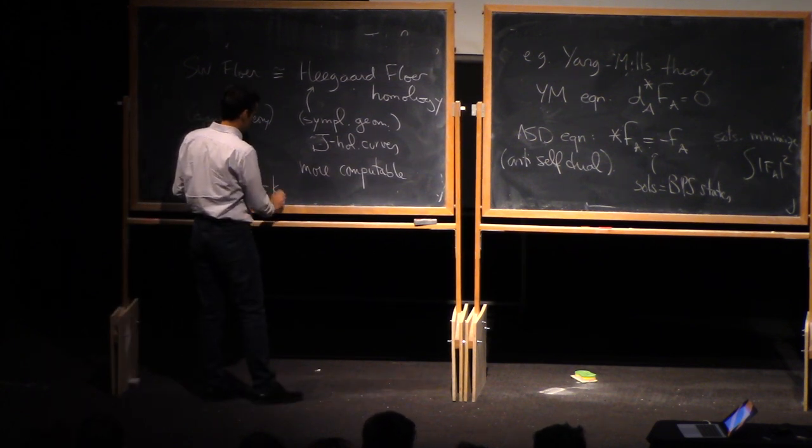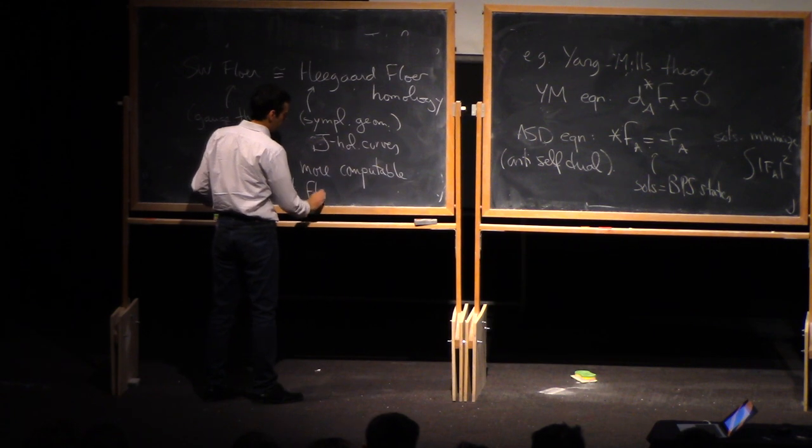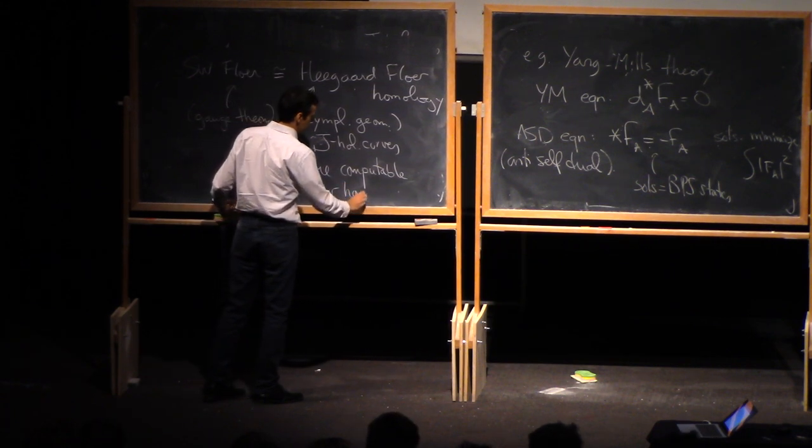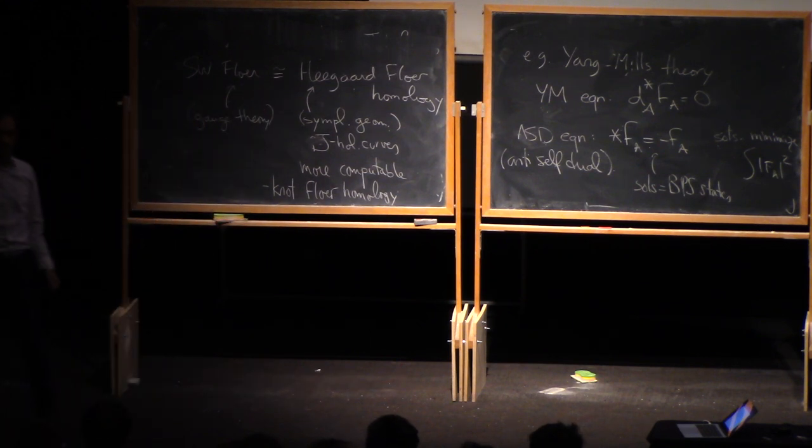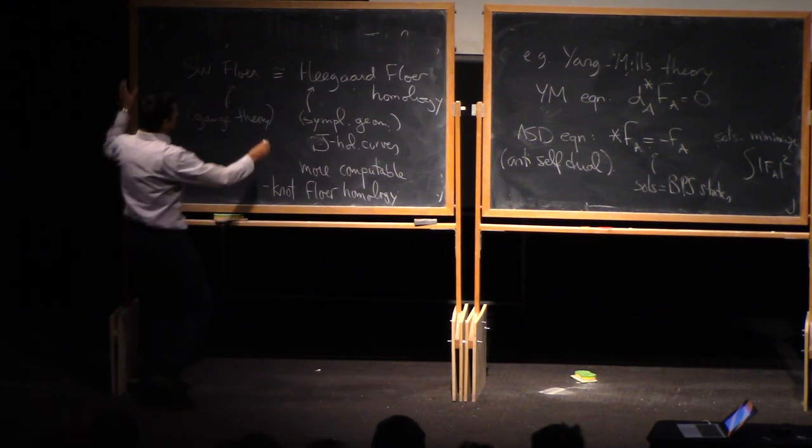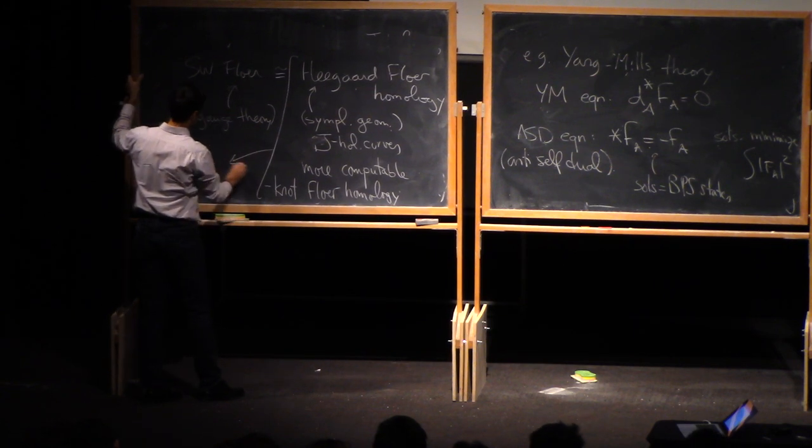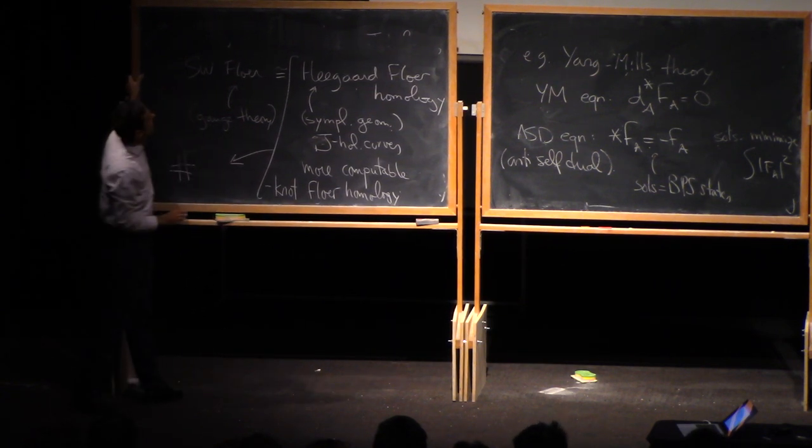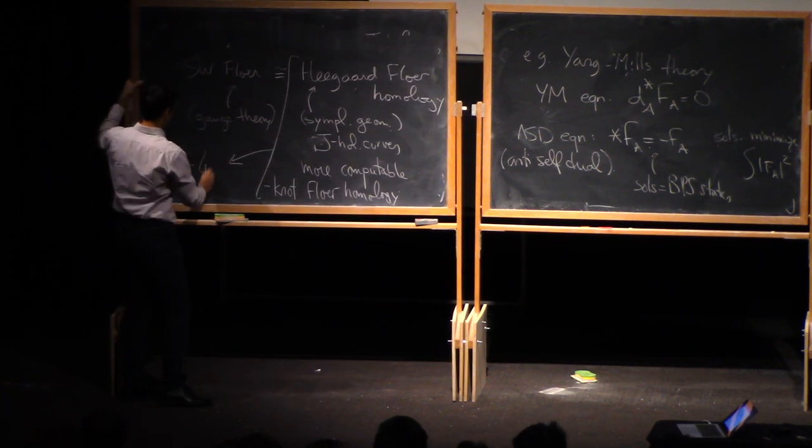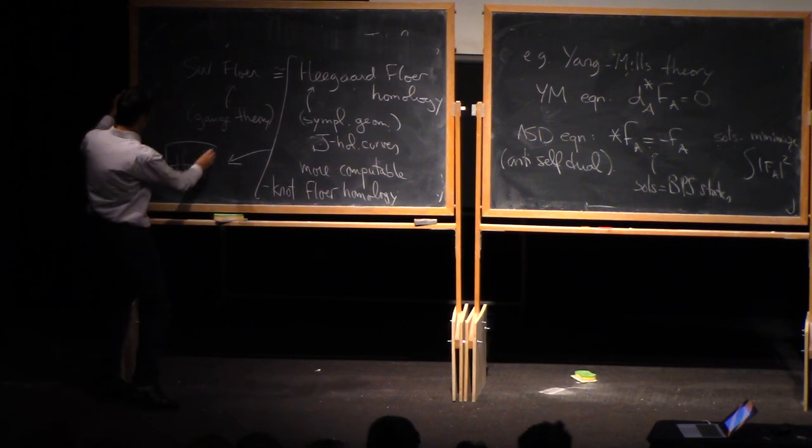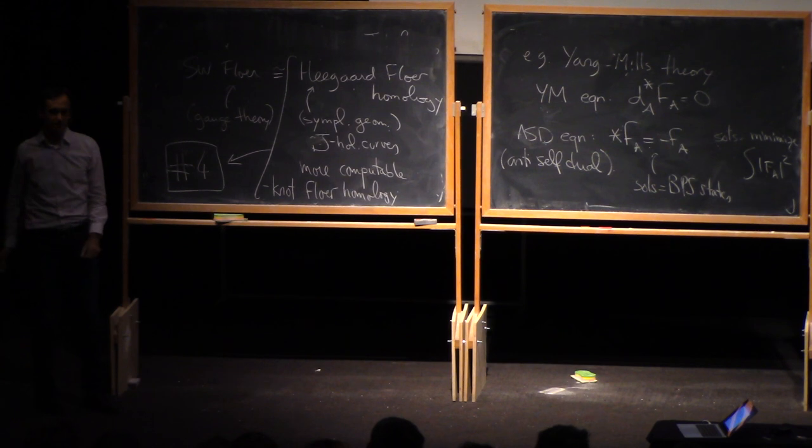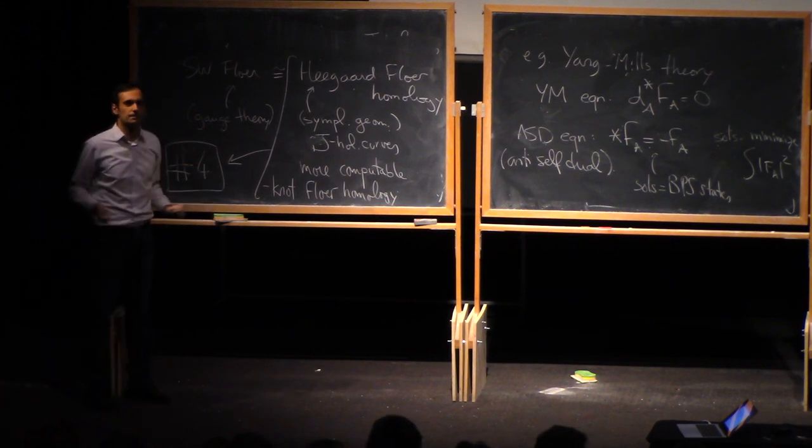And there is a similar, there's also a theory for knots, knot Floer homology. It's kind of Heegaard Floer homology, but if you have a knot in the three-manifold. And this kind of stuff is gonna be covered by Jen Hum in lecture series number four. So, this is really Seiberg-Witten theory, but in disguise.